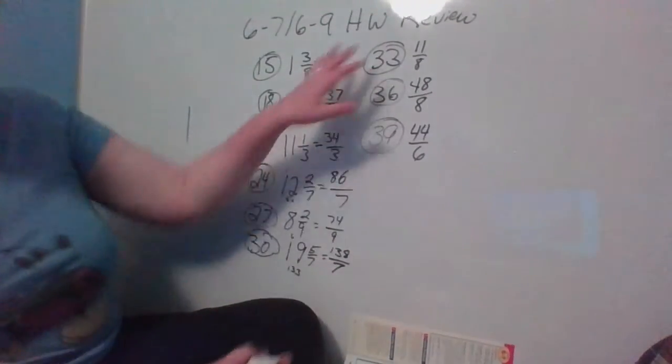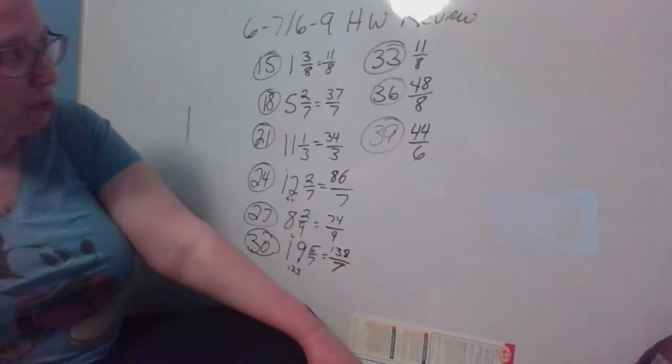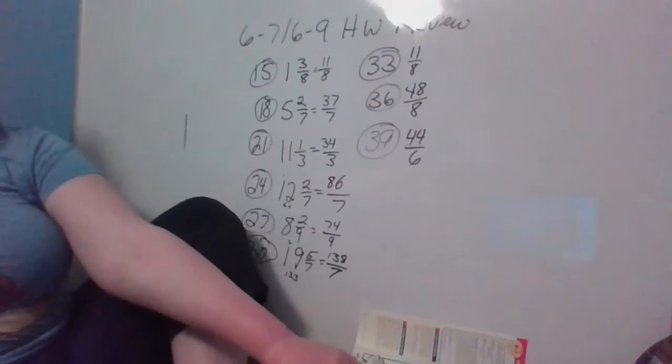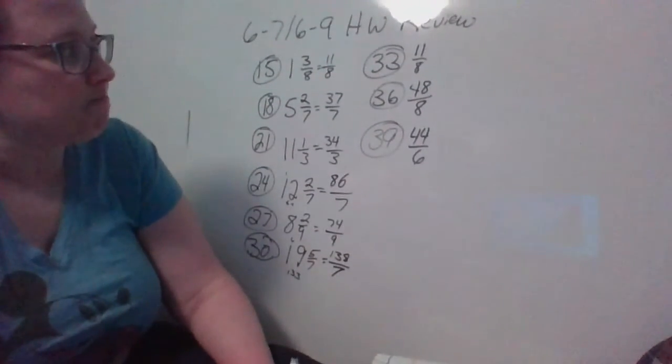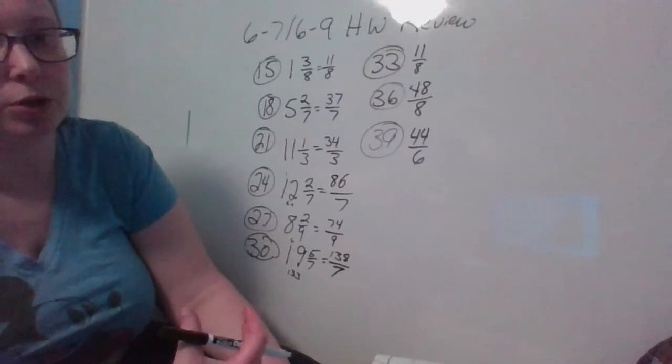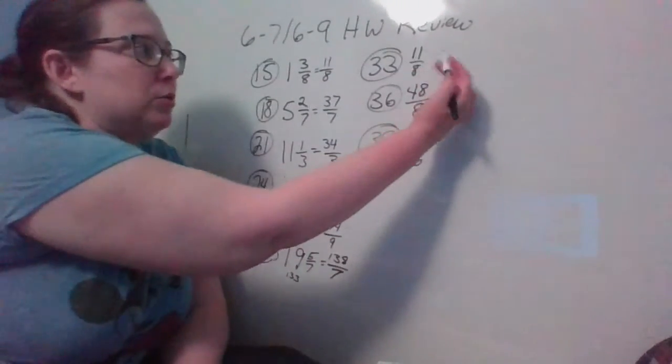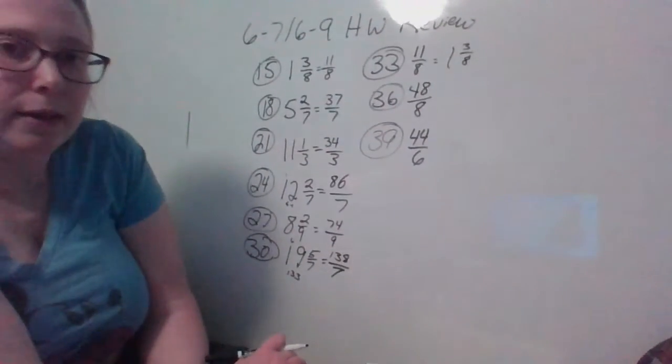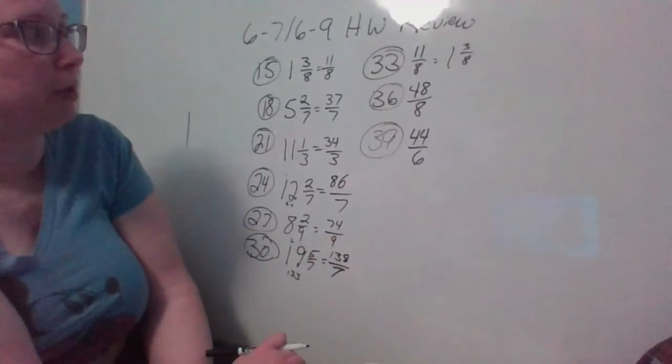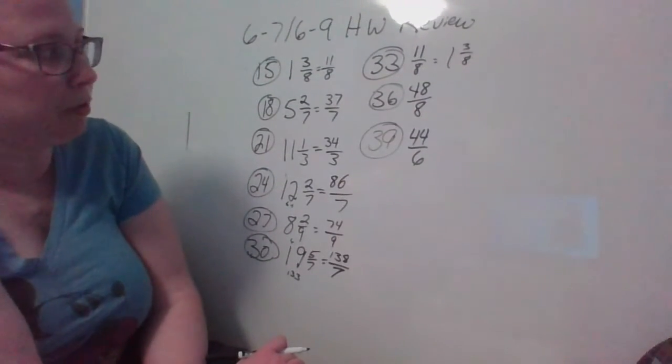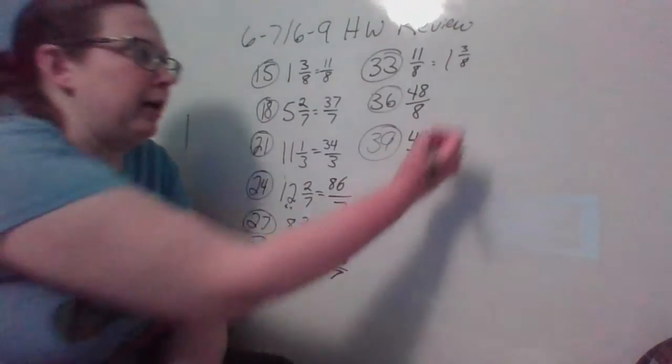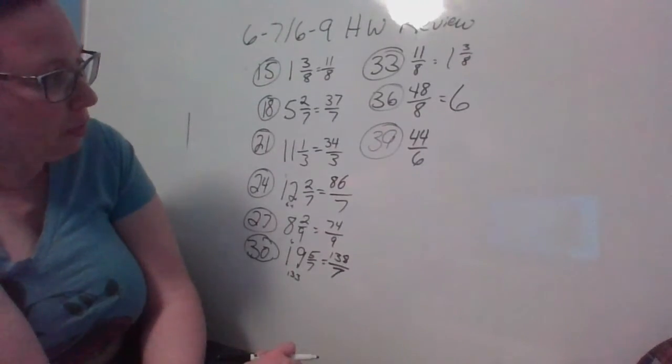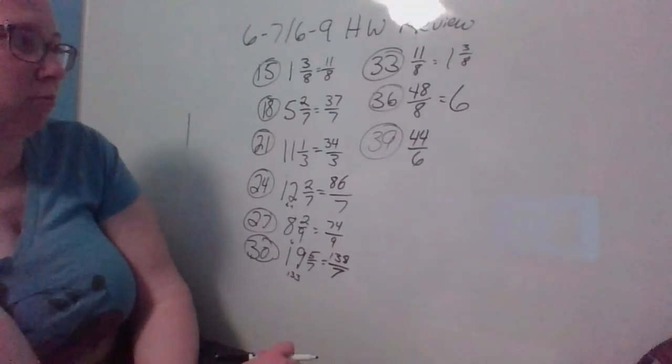And then you had a few where you were changing the improper fraction into a mixed number. To do that, we need to think about how many times does your denominator go into your numerator. Eight goes into eleven one time with a remainder of three, and here our denominator stays the same as well, so we'd have one and three-eighths. With number thirty-six, eight goes into forty-eight six times with no remainder, so we just have a whole number there.